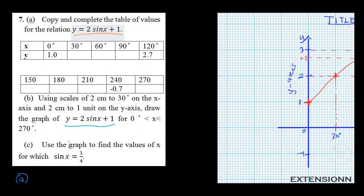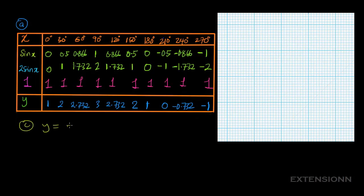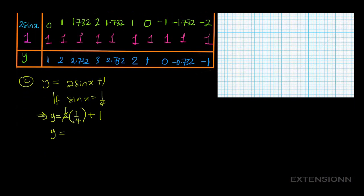The next part says: use the graph to find the value of x for which sin x equals 1/4. Since sin x equals 1/4, substitute into y equals 2 sin x plus 1: y = 2 × (1/4) + 1 = 1/2 + 1 = 1.5. So we need to find the values of x on the graph when y equals 1.5.